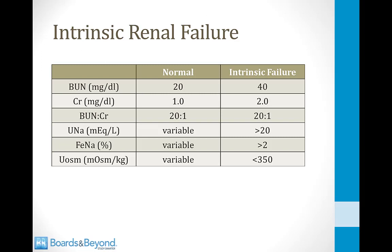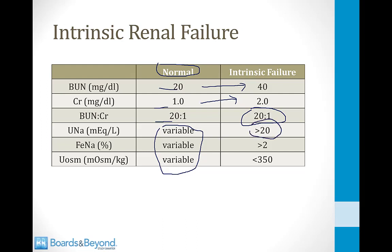In intrinsic renal failure, both BUN and creatinine double proportionally — for example, BUN from 20 to 40 and creatinine from 1 to 2 — maintaining a 20:1 ratio. Urinary sodium will be high (greater than 20), FENA greater than 2%, and urinary osmolarity low (less than 350).